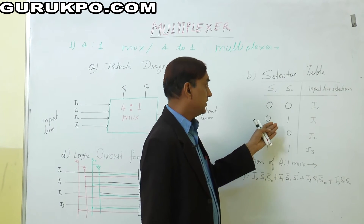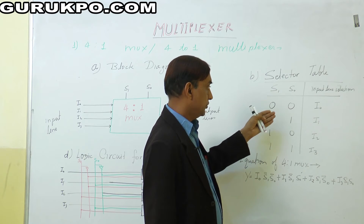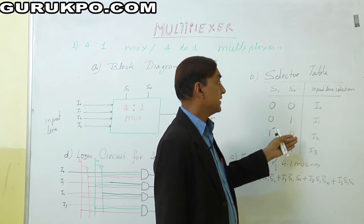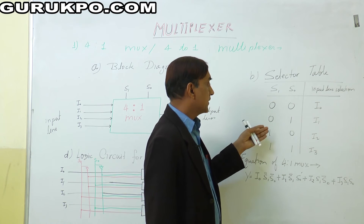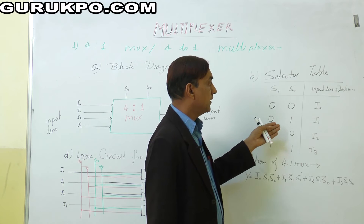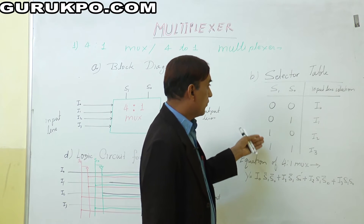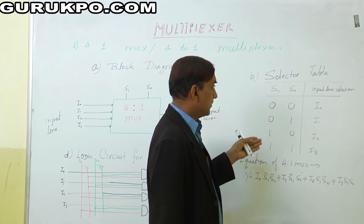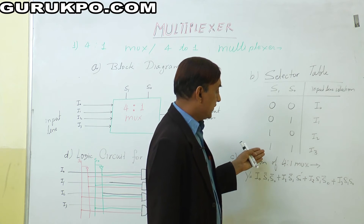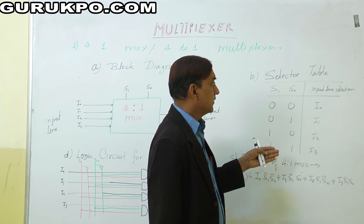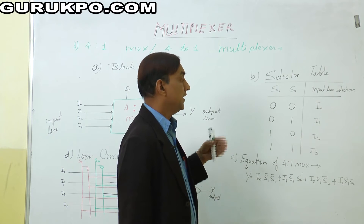There are 4 possible conditions for S1 and S0. When S1 S0 = 00, the multiplexer selects input line I0. When S1 S0 = 01, input line I1 is selected. When S1 S0 = 10, input line I2 is selected. When S1 S0 = 11, input line I3 is selected. This is the selection process used by the multiplexer.